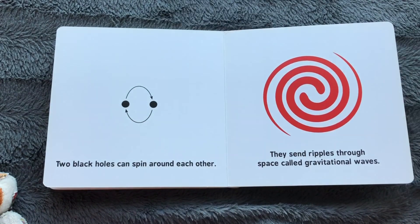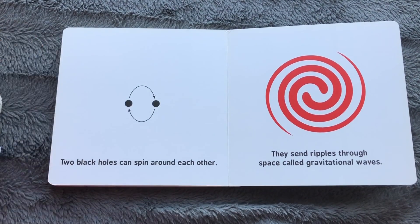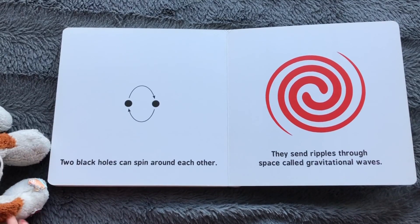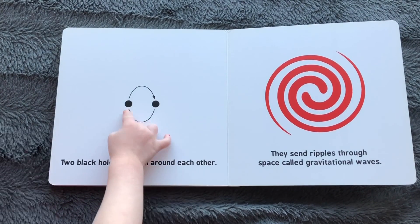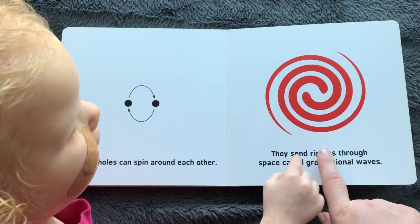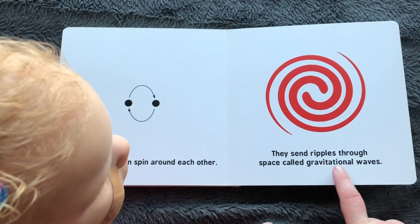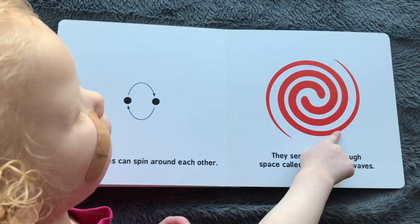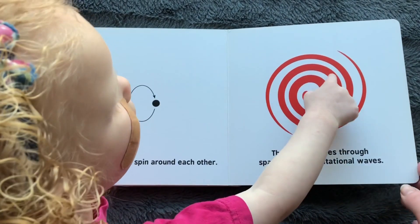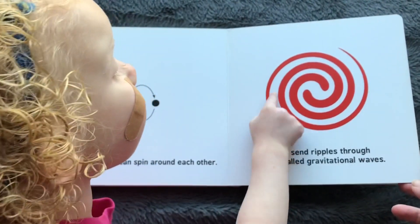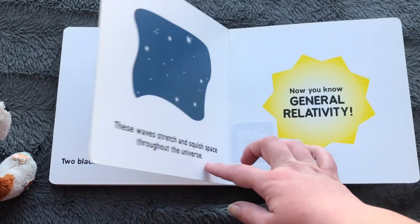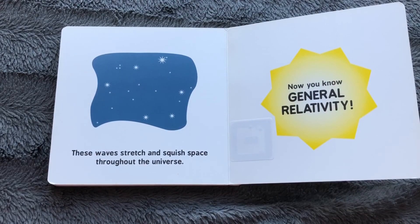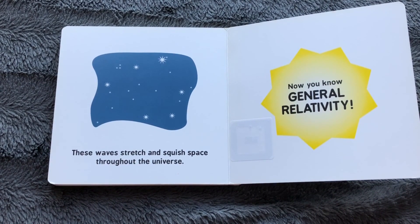Two black holes can spin around each other — spin, spin, spin. They're black holes spinning around each other. And when they spin, they send ripples through space called gravitational waves. These waves stretch and squish space throughout the universe!